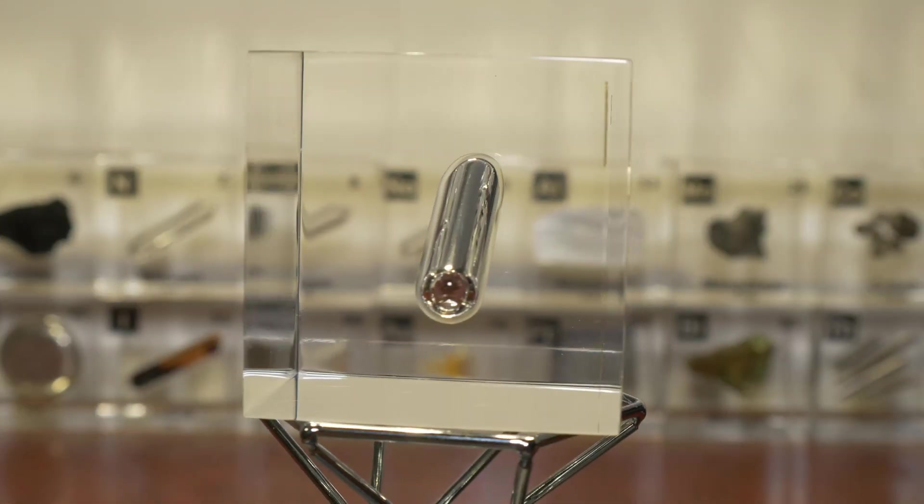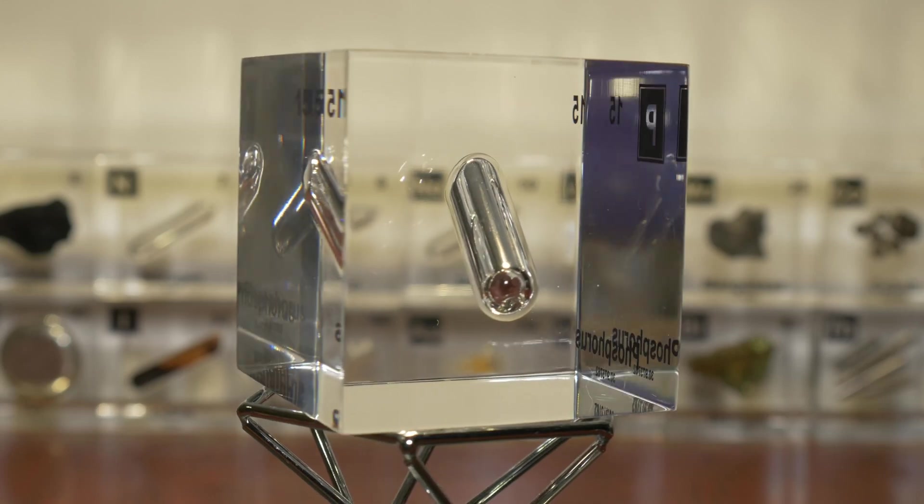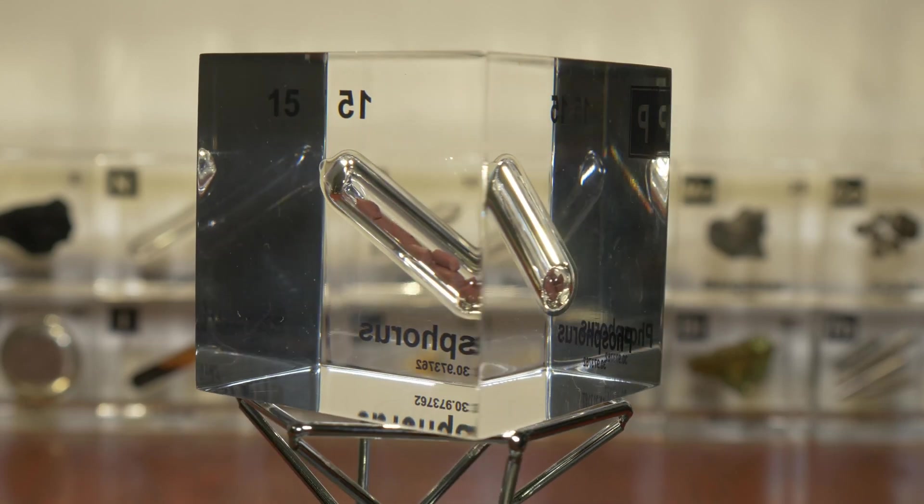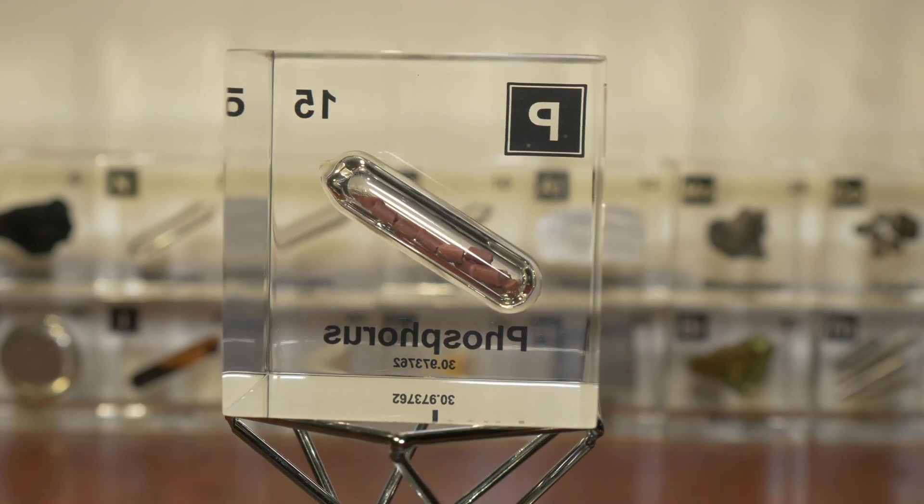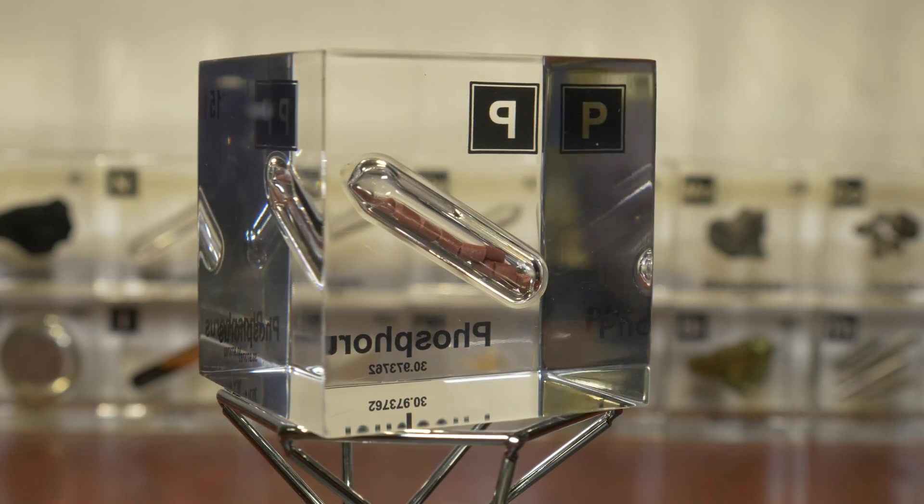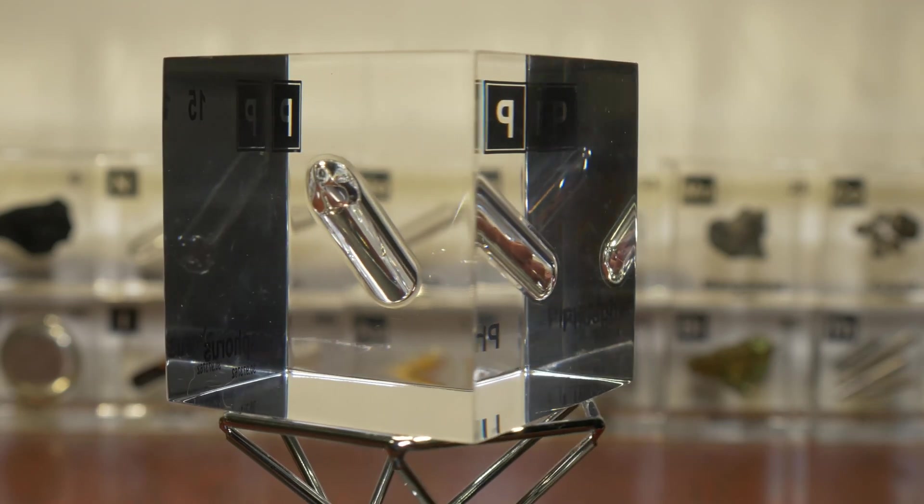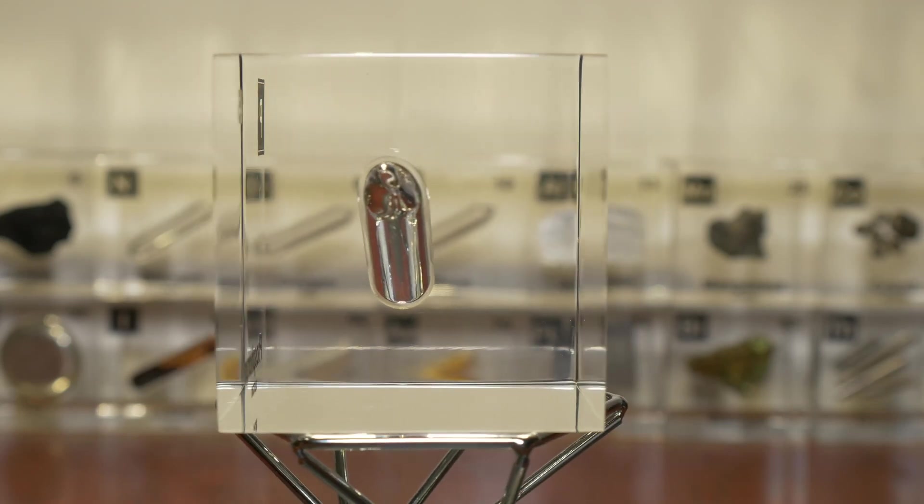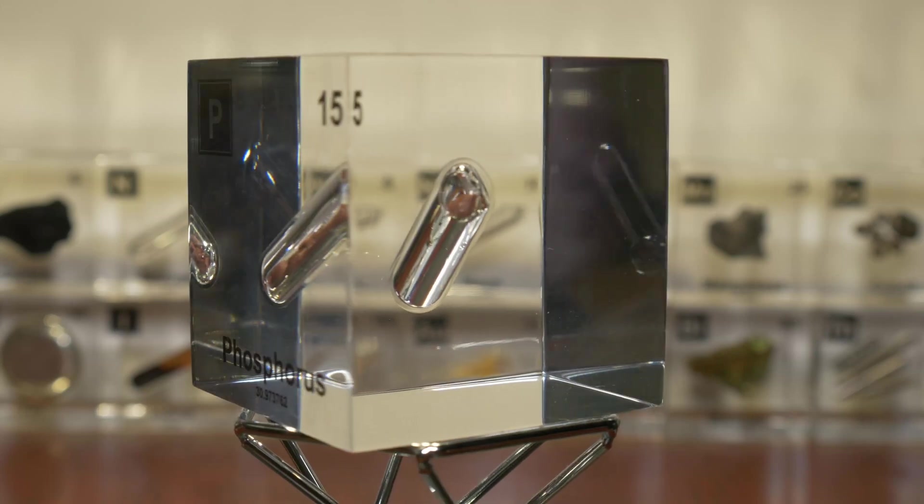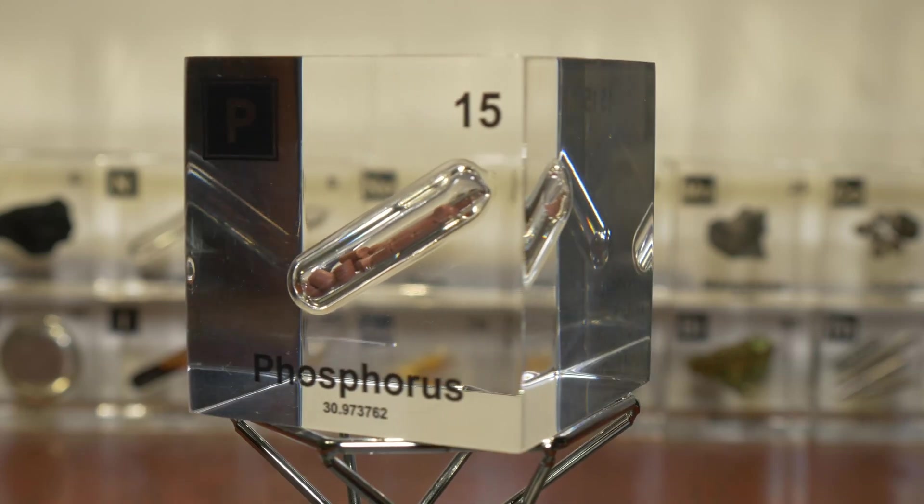Now what we see in this cube seems to be some type of red stones almost like clay. But this is phosphorus in its red allotropic form. Now why do I say red form? Phosphorus is an element that can have multiple appearances and why that is we will discuss in detail.